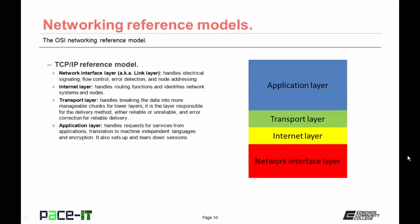Now let's talk about the TCP-IP reference model. This is a four-layer reference model. The lowest layer is the network interface layer, also known as the link layer. It handles electrical signaling, flow control, error detection, and node addressing.